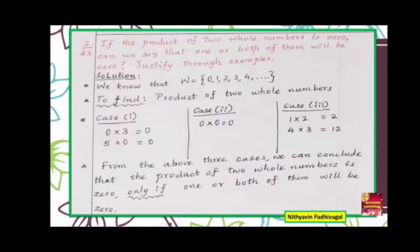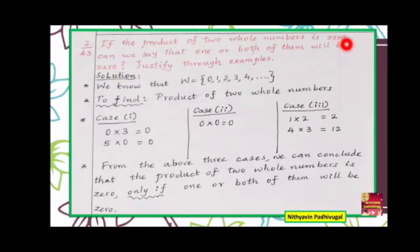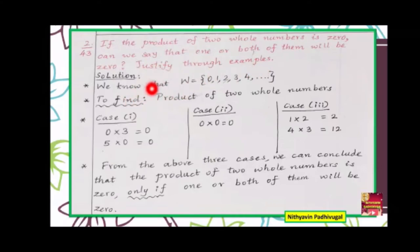Second problem and its solution. If the product of 2 whole numbers is 0, can we say that 1 or both of them will be 0? Justify through examples. We have the hint: whole numbers, so we can choose 0 as one of the factors. Recall: whole numbers W = {0, 1, 2, 3, 4, ...}. Natural numbers along with 0 are called whole numbers.